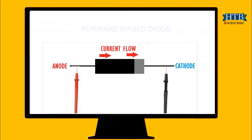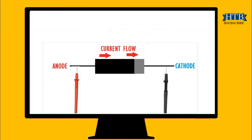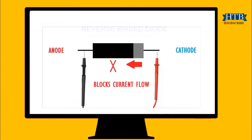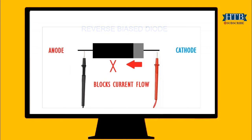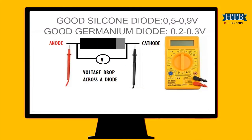A diode is best tested by measuring the voltage drop across the diode when it is forward biased. A forward biased diode acts as a closed switch, permitting current to flow. A diode is forward biased when the positive red test lead is on the anode and the negative black test lead is on the cathode. A diode is reverse biased when the positive red test lead is on the cathode and the negative black test lead is on the anode.